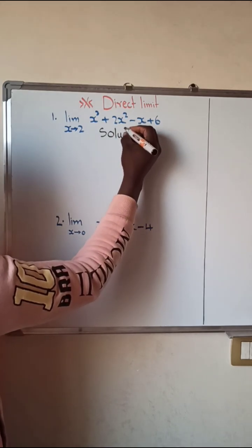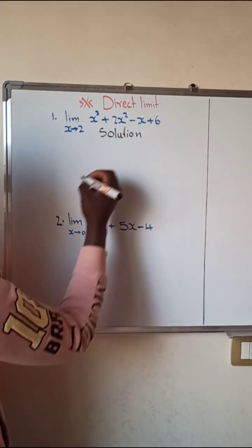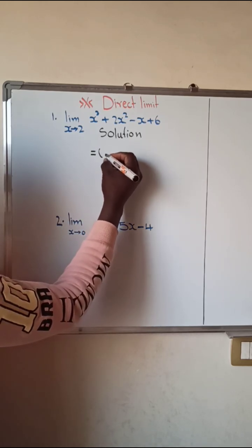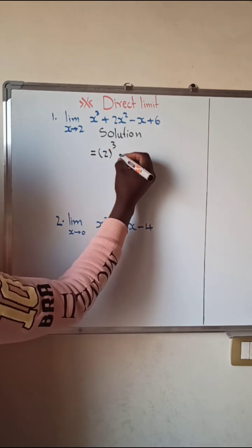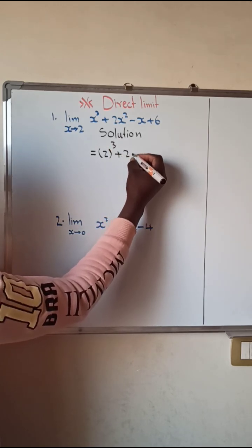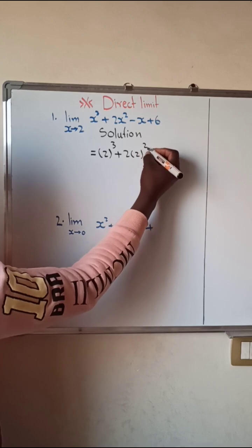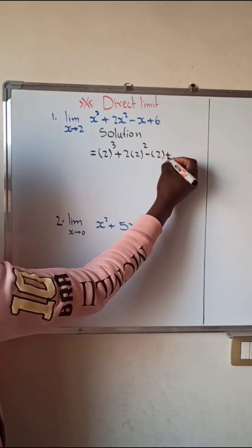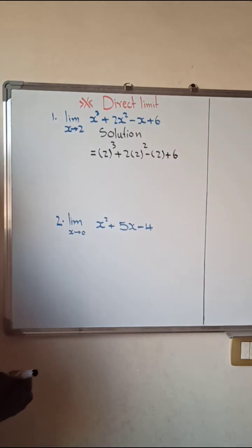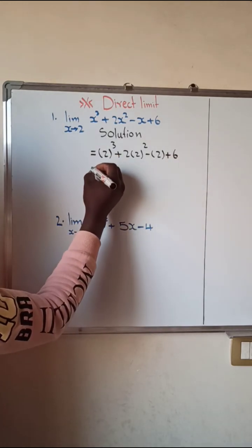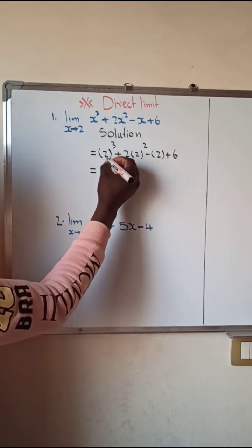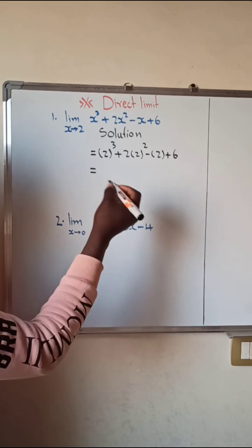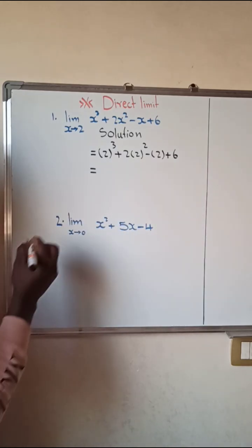So for the solution, we substitute x = 2: we have (2)³ + 2(2)² - (2) + 6. Now, 2 raised to the power of 3 means 2 in 3 places, and 2 × 2 × 2 gives us 8.